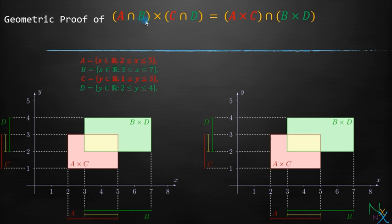Their intersection A intersection B will be this yellow colored line and C intersection D will be represented by this yellow line on y-axis. Our intention here is to express left hand side geometrically on this Cartesian plane and expression on right hand side on this Cartesian plane and then we will observe whether they are equal or not.